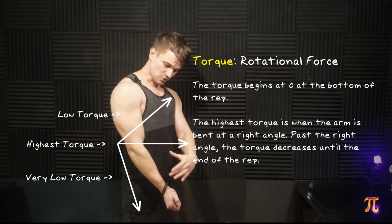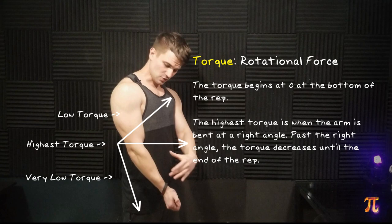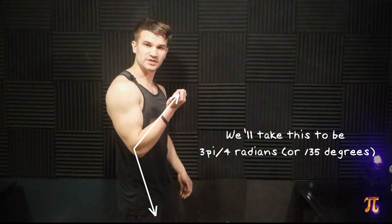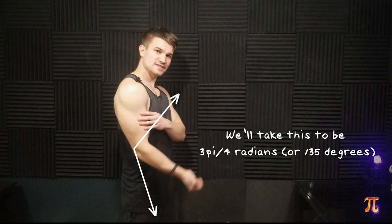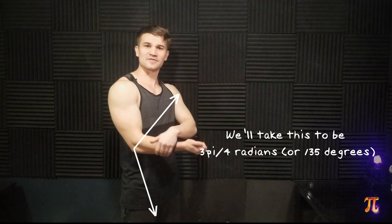So the torque being applied is varying continuously throughout the rep, and it's varying with respect to the angle formed by my forearm and my upper arm. We'll say the starting position is the angle zero radians, and we'll say that the final position of the rep is 135 degrees, or 3π/4 radians. The radius of the circle being traced is also involved in torque, but to simplify things, we'll just say that my forearm is exactly 1 foot long.